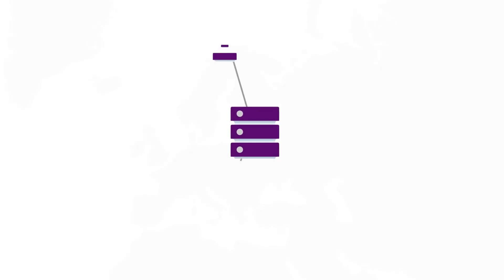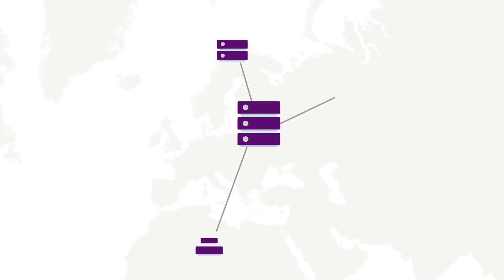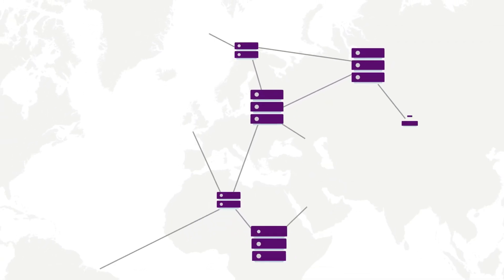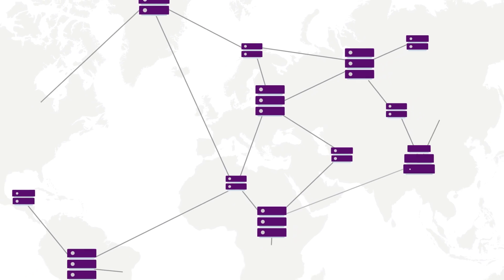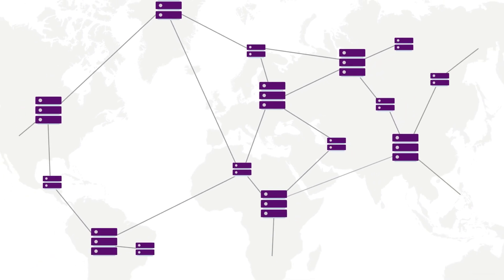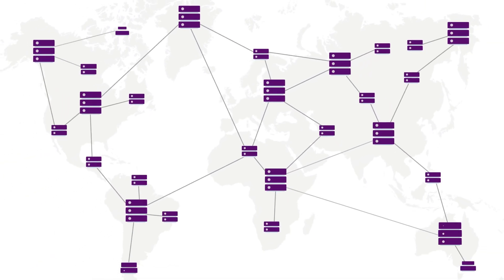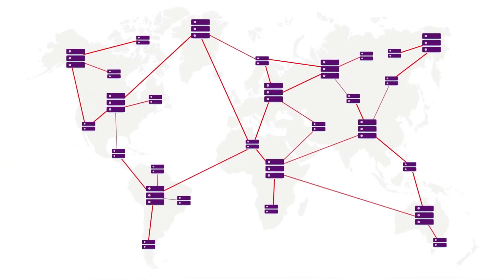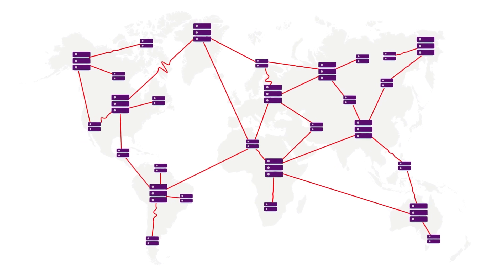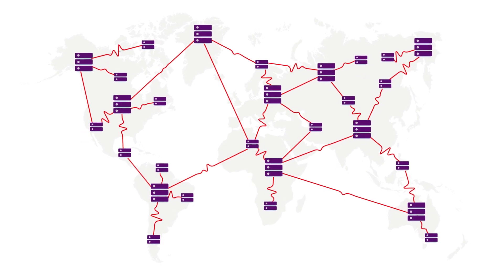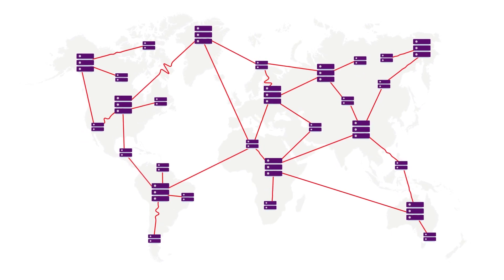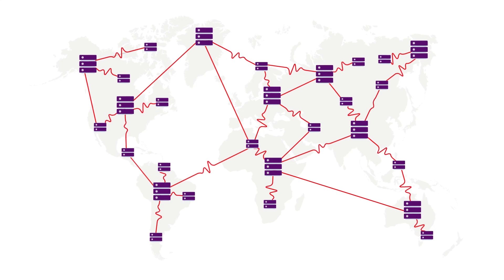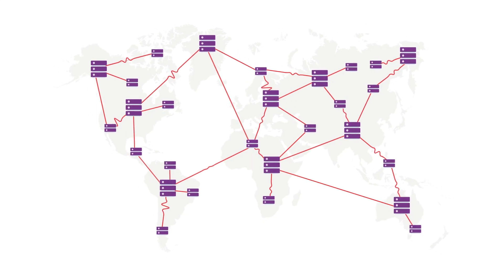Blockchain technology was created to enable economic systems where borderless transactions can be achieved without the need for a central authority. But without these, how do users agree on which transactions should be written to the blockchain? How do they come to consensus?